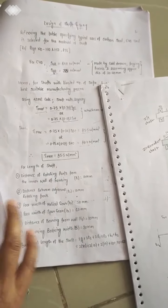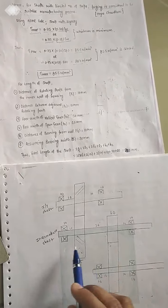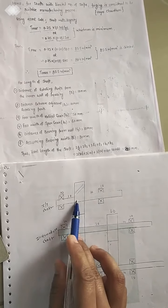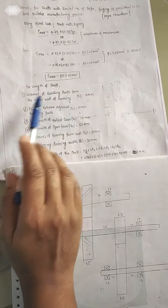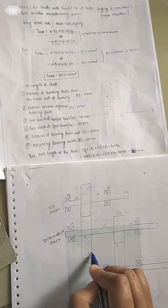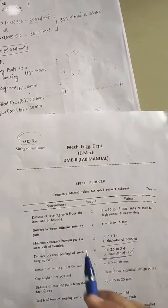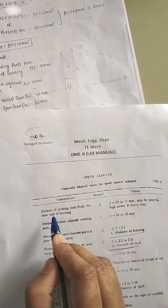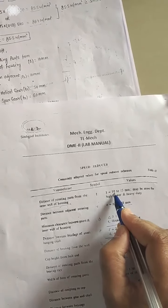To find the length of the shaft, we use a standard reference diagram. Let's discuss the length of the intermediate shaft first, then apply the same approach to the input and output shafts. The first parameter is the distance of the rotating part (the gear) from the inner wall of the housing. From the chart, this distance is taken as 10 to 15 mm; we take l1 = 10 mm.